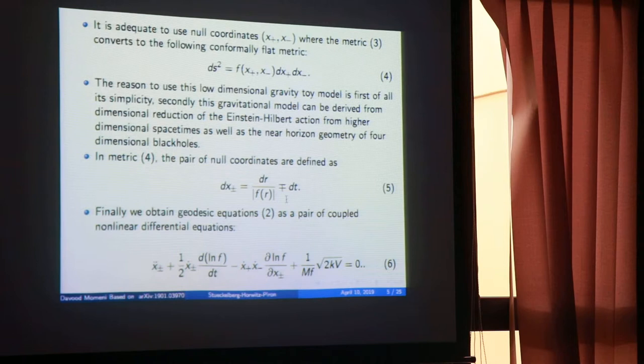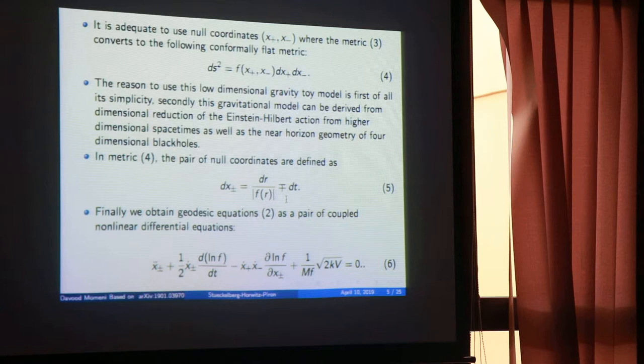This is just the representation of the geometry in new coordinates, called null coordinates. Equation five is the definition of these new coordinates. If you fix the function f — which measures the strength of gravity — you can find the pair of coordinates. Equation six is the equation of motion for the particle; if you can integrate it, you can find the path of the particle near the region of strong gravity.